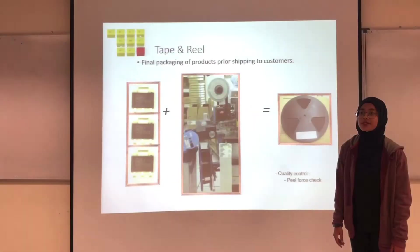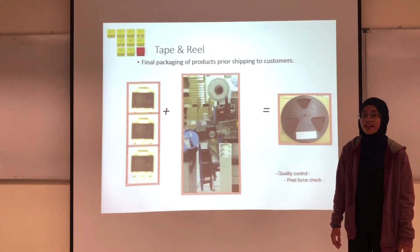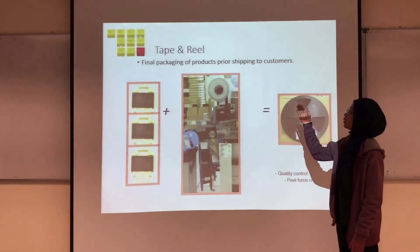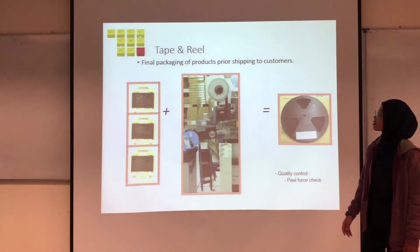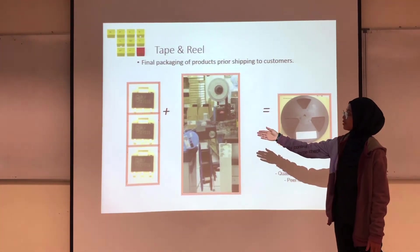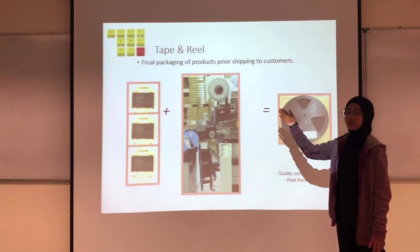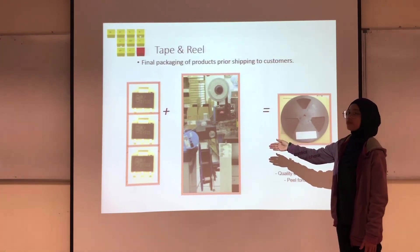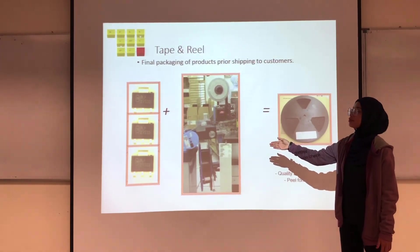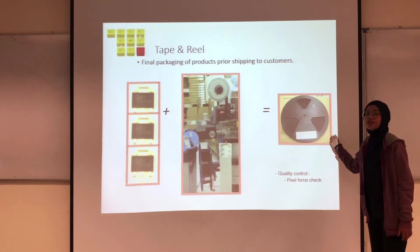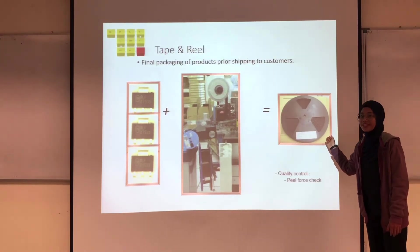The last process for the back-end is tape and reel, which is the final packaging of products prior to shipping to the customer. This shows the material before the tape and reel process, the machine used, and the final product after this process.